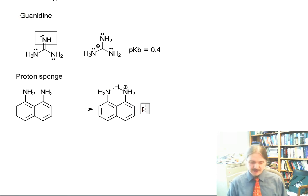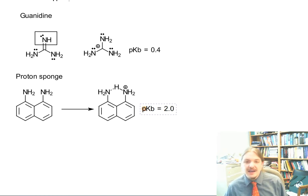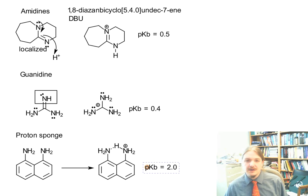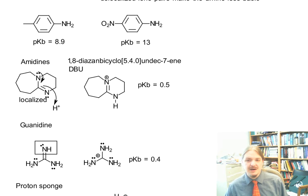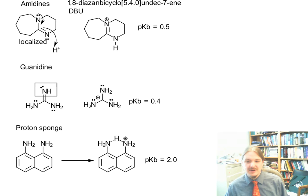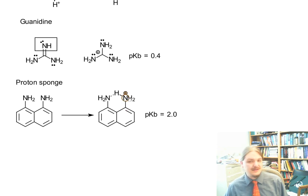And the pKb of proton sponge is 2.0. So it's not as basic as guanidine or DBU, but it's still pretty basic in comparison to the other aniline-like compounds. So even though these are delocalized lone pairs, the proton itself can be shared between two nitrogens.